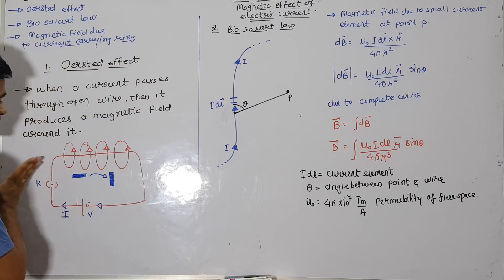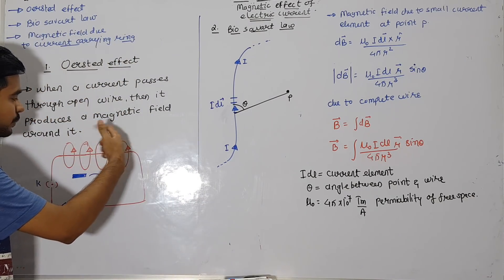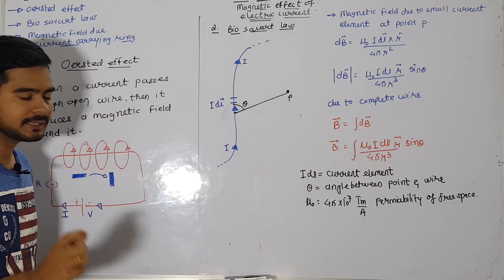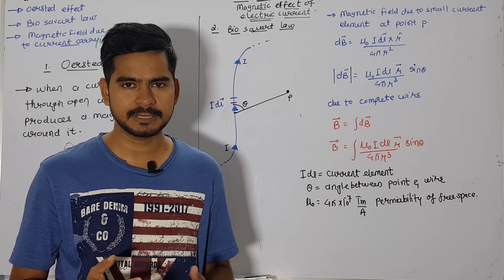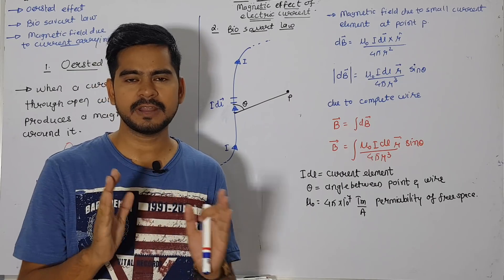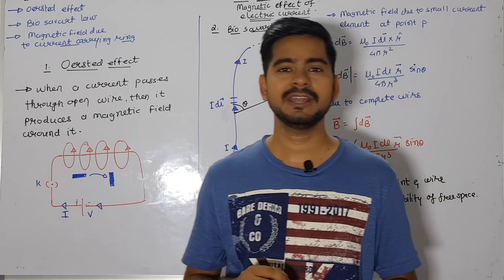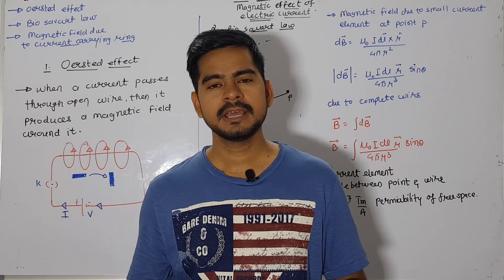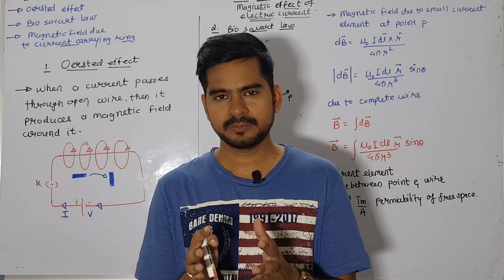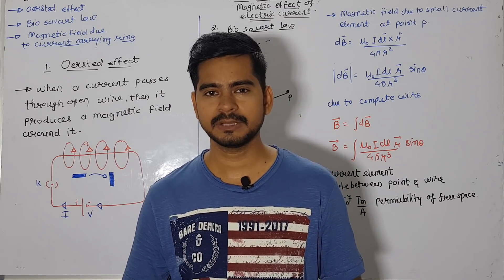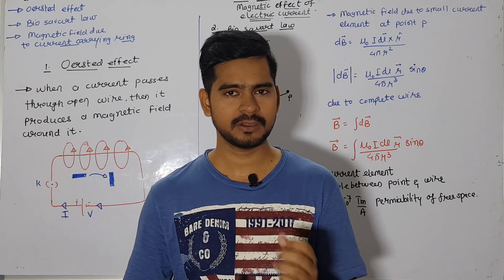The same effect happens when we place an iron needle near a magnet — the magnet attracts the needle through its magnetic field. In the same way, when the battery key was switched on and current flowed, the same effect was produced as a normal magnet: magnetic field loops formed around the wire. Because of these magnetic field loops, the magnetic needle deflects from its original position. This proved that whenever current passes through an open wire, it produces a magnetic field around it.